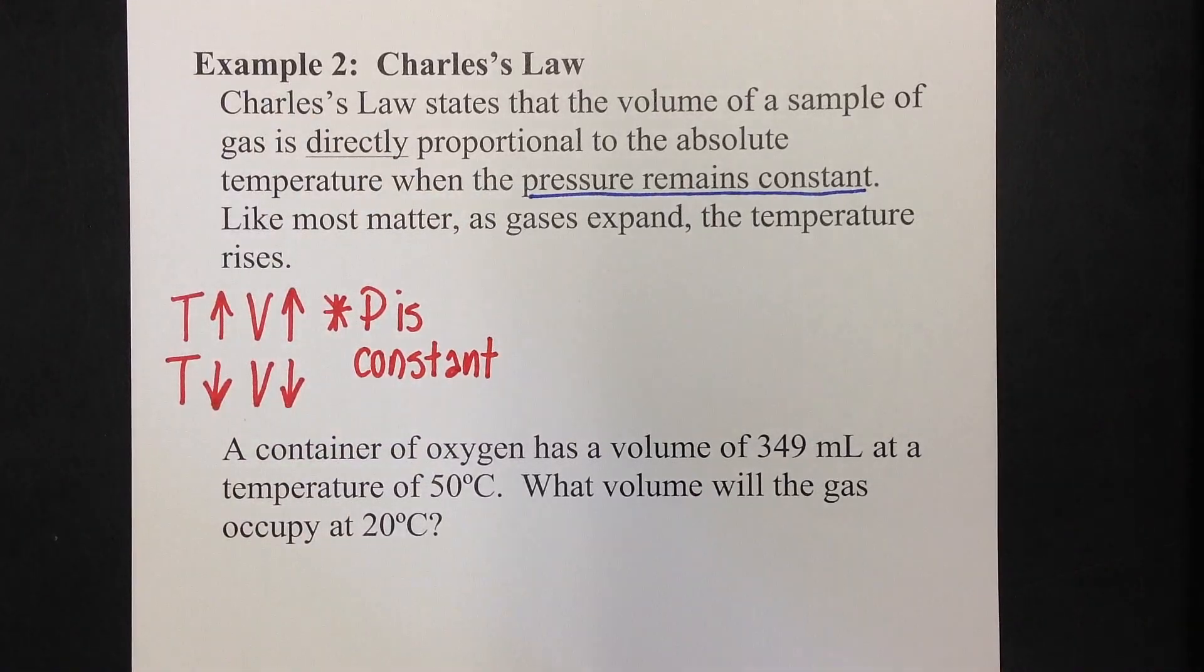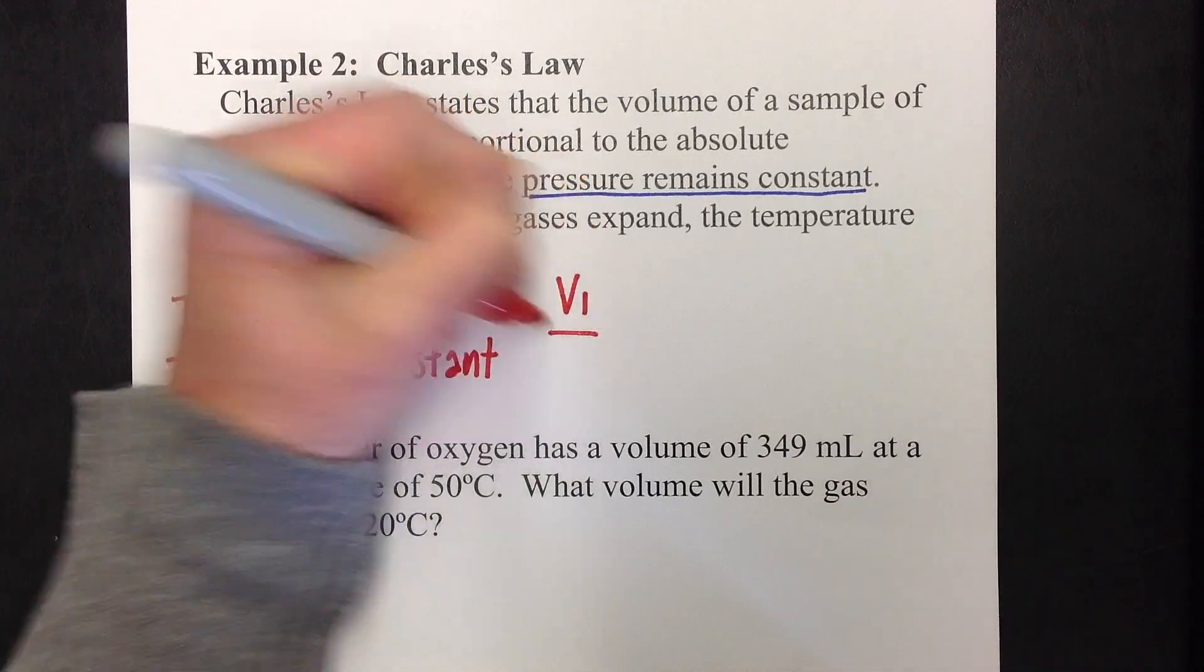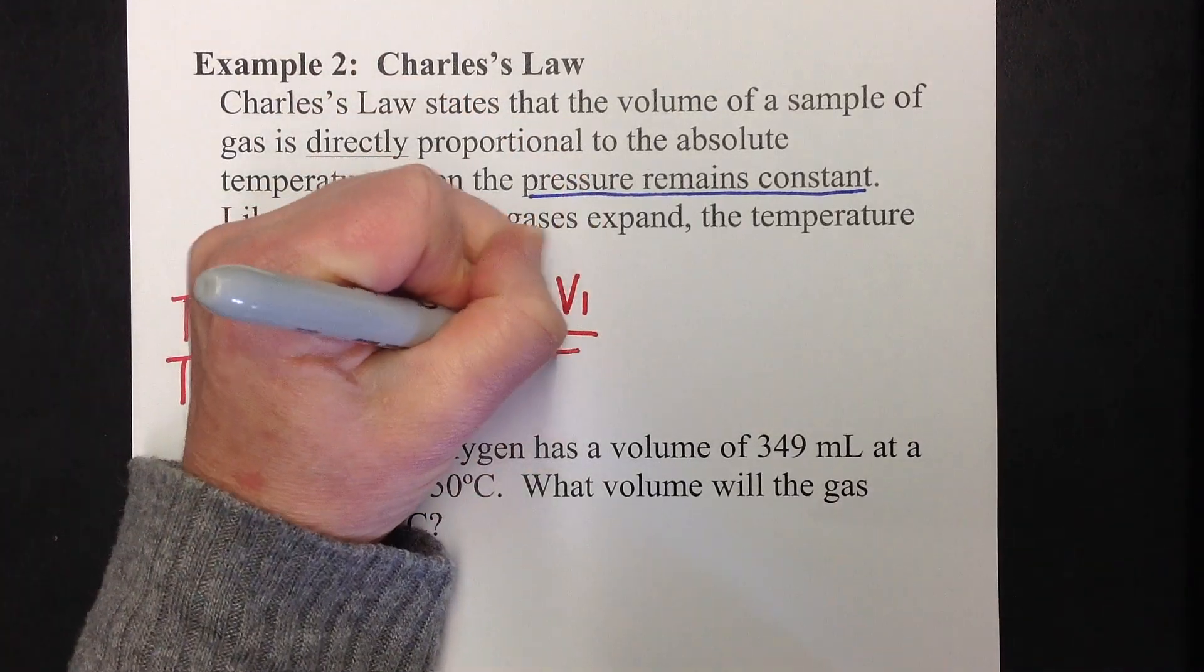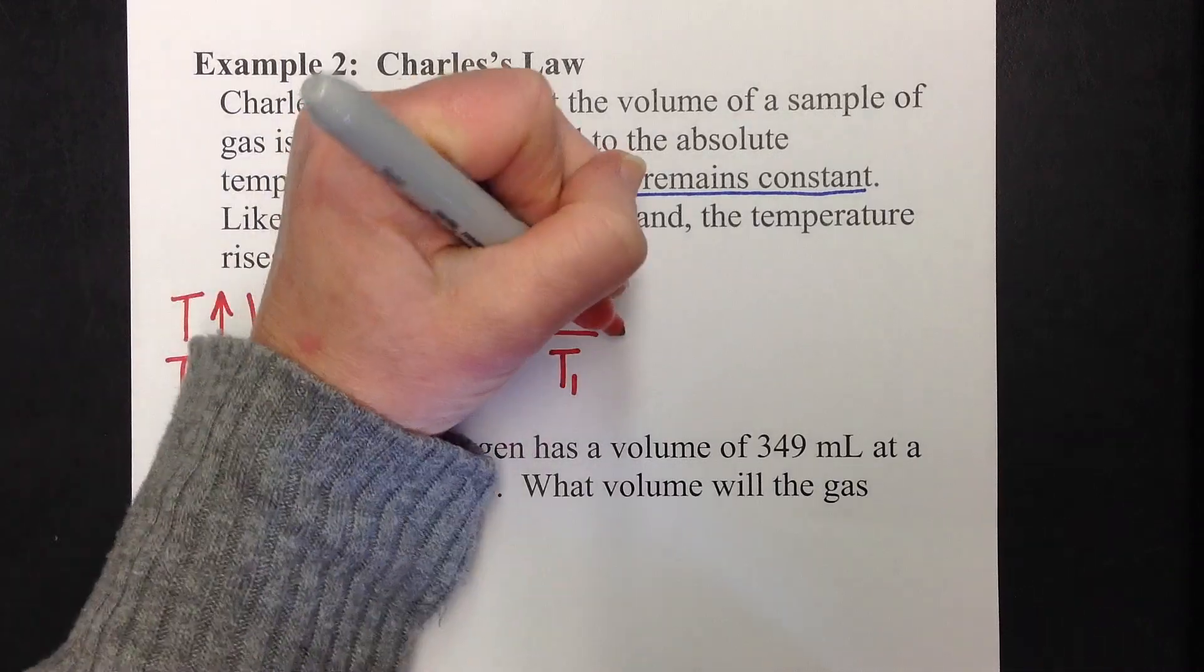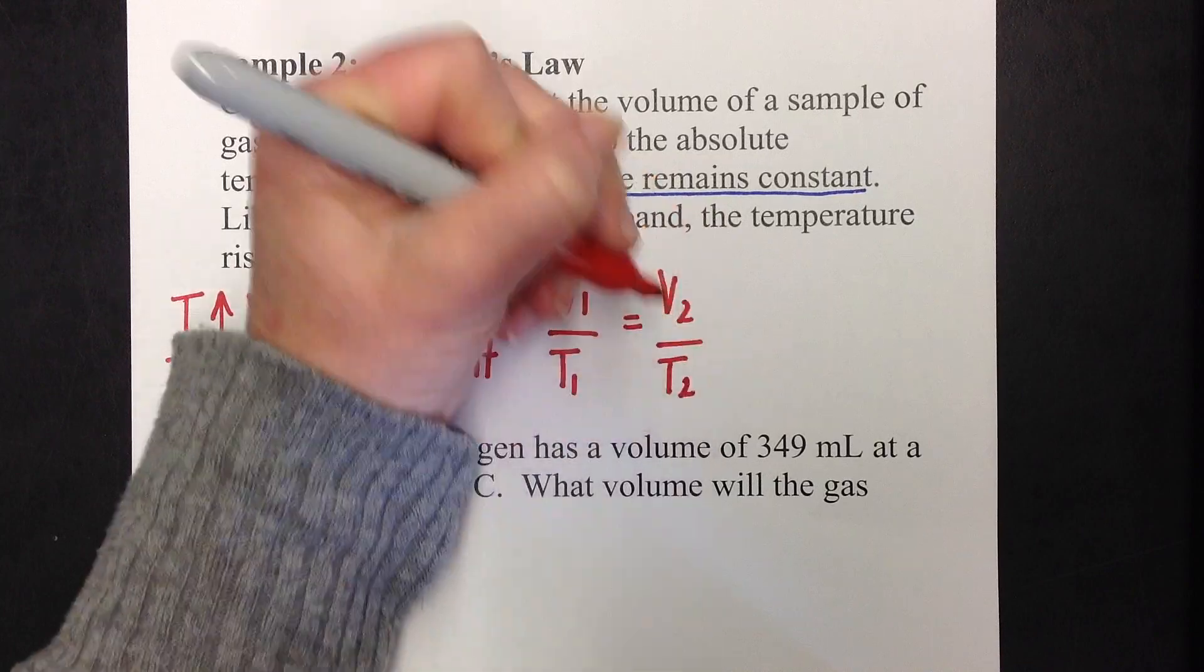So the law for Charles's law looks like this. Volume 1 over temperature 1 equals volume 2 over temperature 2.